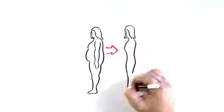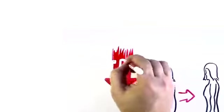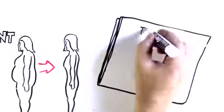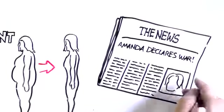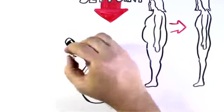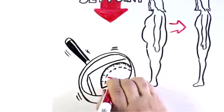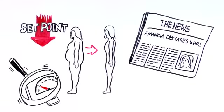For Amanda to lose weight and keep it off, she needs to find a way to lower her set point. That is, rather than declaring war on her own biology, she needs to find a way to make her body regulate itself to a new, lower weight.